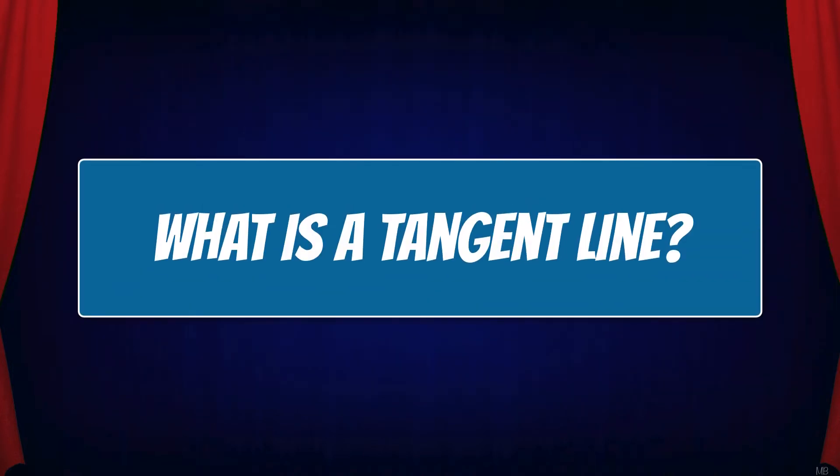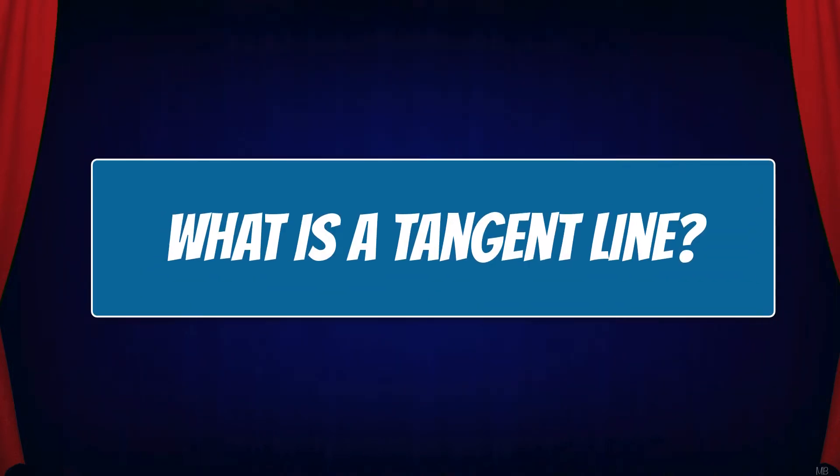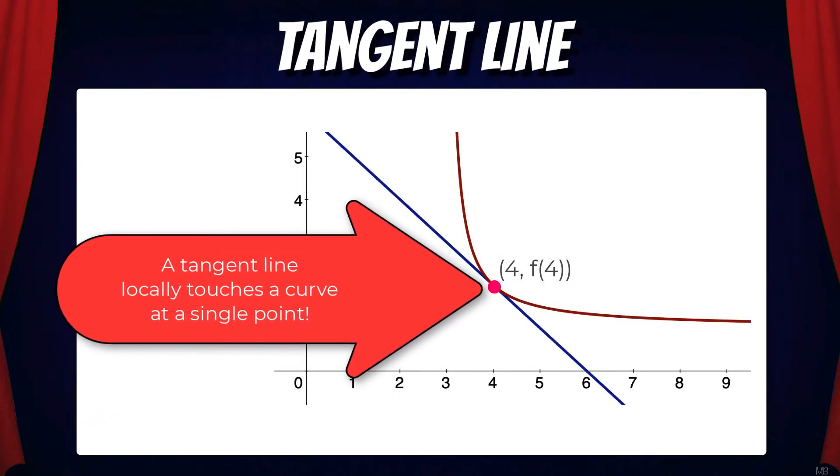But what is a tangent line? Let's make sure you understand this concept. A tangent line is a line that locally touches a curve at a single point.